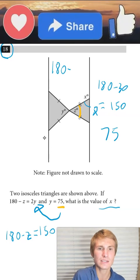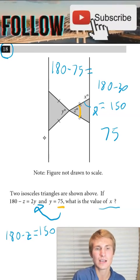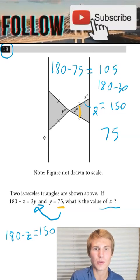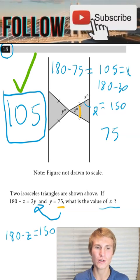Next I have to do 180 minus 75 to solve for angle x since that's along a line, and that's going to leave me with 105 is equal to x. So the answer is 105.